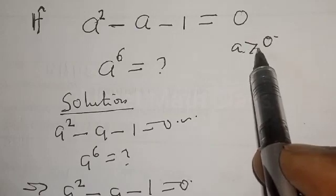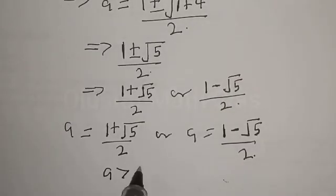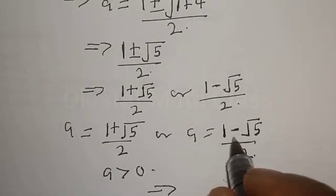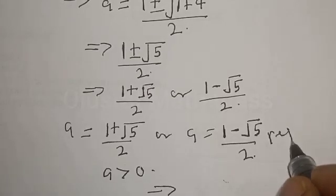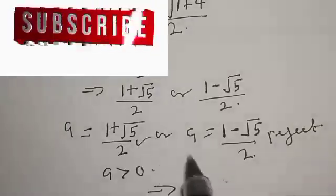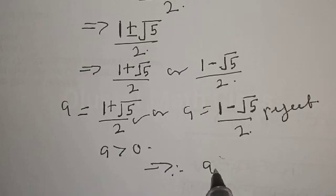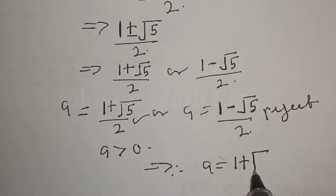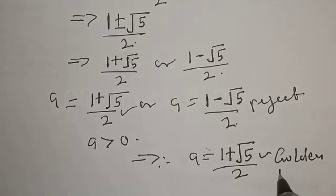But we have a greater than 0. Since our a is greater than 0, then 1 minus root 5 over 2 is negative, so we reject this. We accept 1 plus root 5 over 2. Therefore, our a is equal to 1 plus root 5 over 2. This is our golden ratio.